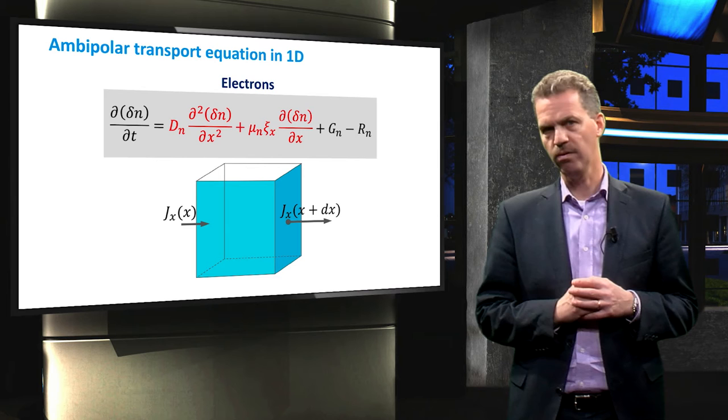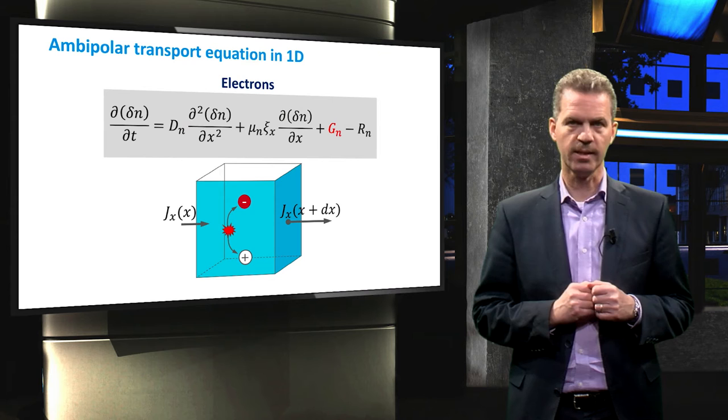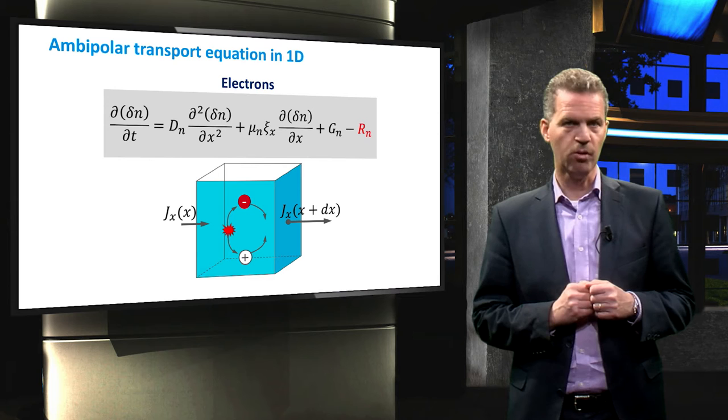Charge is flowing in and out of this volume element by drift and diffusion. Inside the volume element, charge is generated, and charge is also recombining.